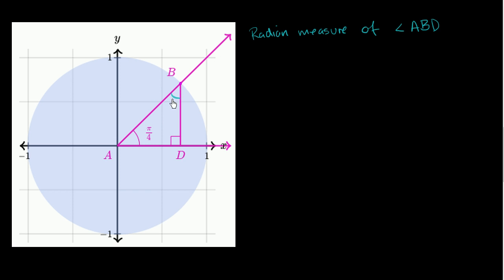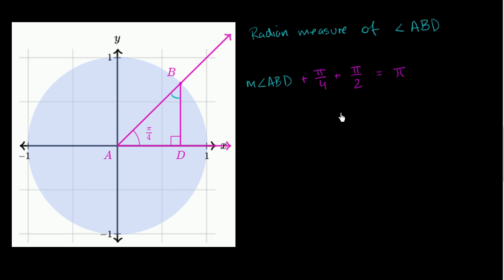Now, we're used to saying that the sum of the interior angles of a triangle add up to 180 degrees. But now we're thinking in terms of radians, so we say the angles add up to pi radians instead. So this angle plus that angle plus that angle are going to add up to pi. The right angle at D is pi over 2 radians, so: measure of angle ABD plus pi over 4 plus pi over 2 equals pi.